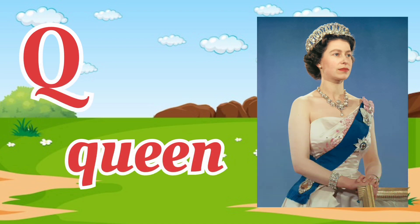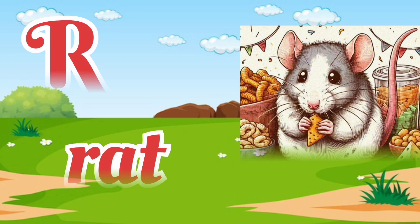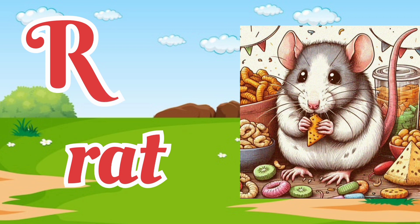Q for queen. Queen means rani. R for rat. Rat means chuhla.